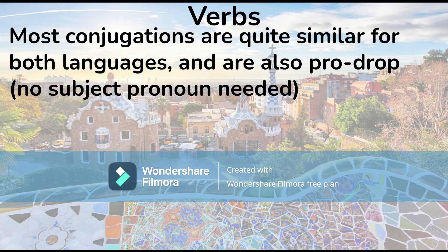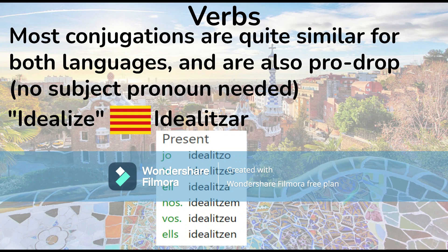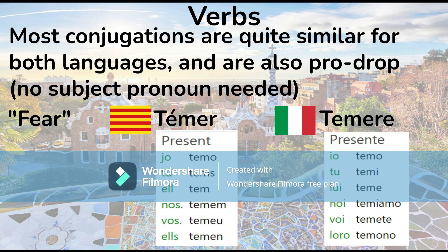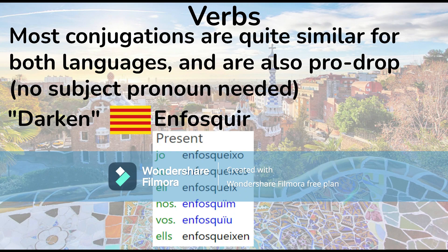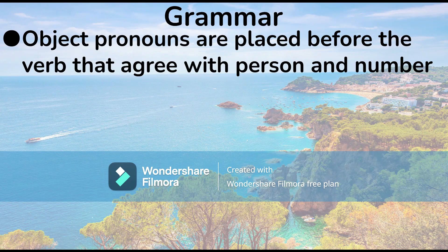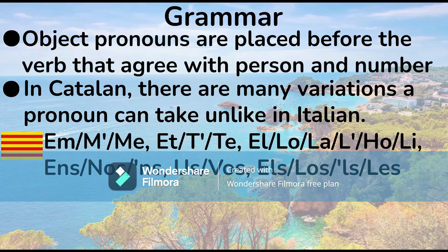Most conjugations are also quite similar for both languages. Both languages are also pro-drop languages, meaning that the subject pronoun is not needed. For example, the verb meaning to idealize: 'idealitzar' in Catalan and 'idealizzare' in Italian. The verb for fear: 'temer' in Catalan and 'temere' in Italian. And the verb for darken: 'enfosquir' in Catalan and 'oscurire' in Italian. Notice that these are irregular verbs, with -ish verbs corresponding to -ish verbs. Object pronouns are placed before the verb and agree with person and number. In Catalan, many variations of the same pronoun are used in conjunction with each other, unlike in Italian.